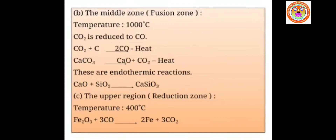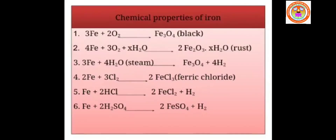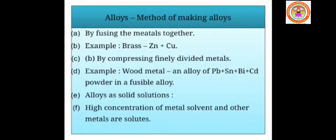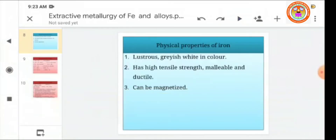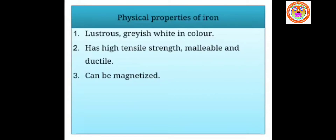Thus, the metal iron is extracted from its ore hematite. Coming to the physical properties of iron: iron is lustrous and shiny in nature, grayish-white in color, and has high tensile strength — it can withstand very high temperature, pressure, and tension.